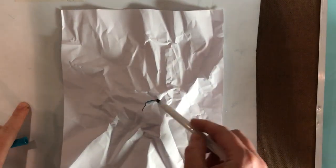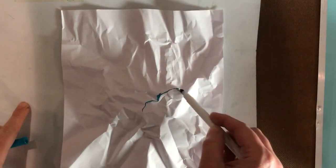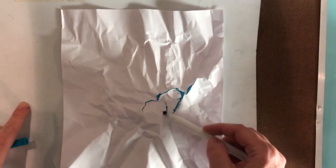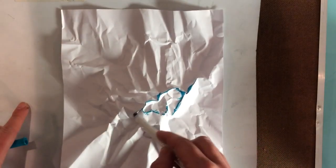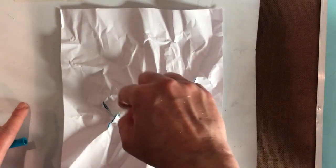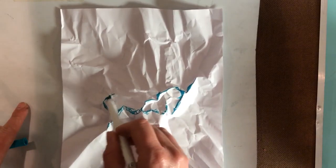Along all the highest spots, kind of those thickest wrinkles, you're going to use your marker and you're just going to color along those high spots. Now the thicker your marker line, the more visible this experiment will be for you.